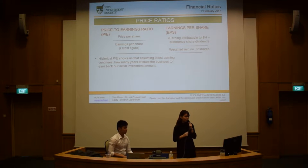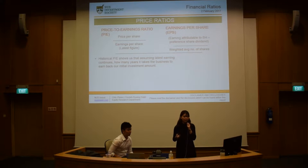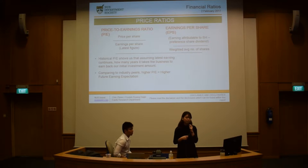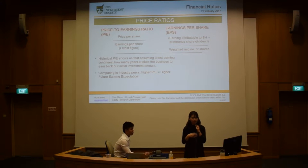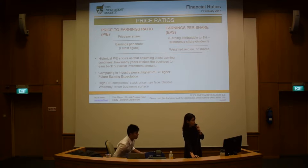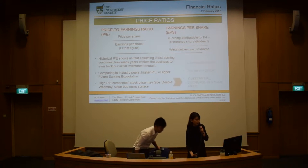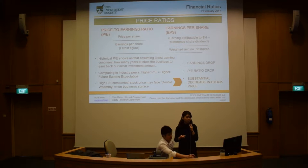What do these ratios tell us? Historical PE shows us that, assuming the latest earnings continues, how many years it takes the business to recoup your initial investment. Comparing to industry peers, a higher PE ratio would mean a higher future earnings expectation, so higher PE means better. However, higher PE companies' stock price may also face something called a double whammy when bad news surfaces — your earnings drop, your PE ratio drops, and this results in a substantial decrease in your stock price.